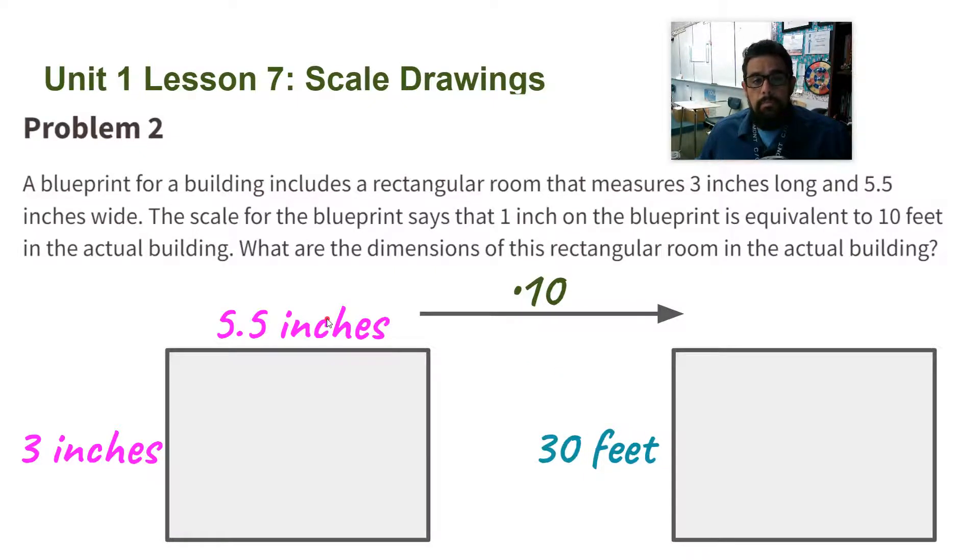For the width, we have five and a half inches times 10, which is 55 feet. Okay, so just remember when you're doing these problems there's two things happening, the scale drawing and then the actual room. And remember which measurements go with which one. And this one's easy because inches, you know that's a drawing. Feet, you can't really draw 30 feet on a piece of paper. Thank you, ladies and gentlemen.